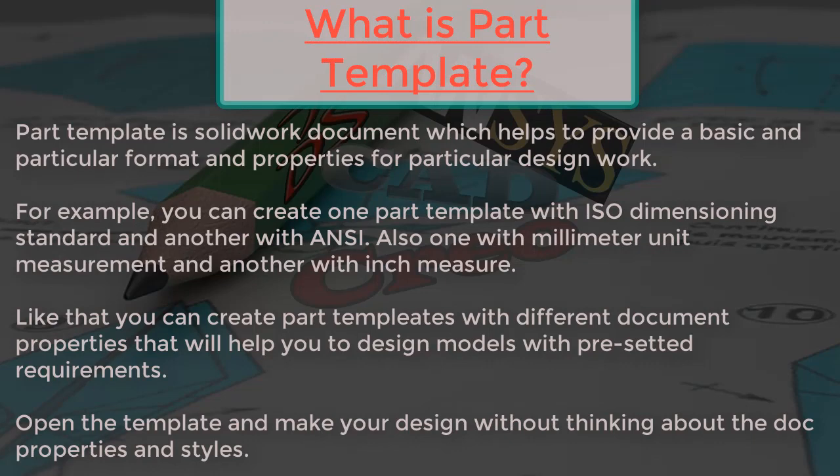What is a part template? A part template is a SolidWorks document which helps to provide a basic and particular format and properties for design work. For example, you can create one part template with ISO dimensioning standard and another with ANSI, the American standard. Also one with millimeter units and another with inch measurement. You can create part templates with different document properties to help you design models with pre-set requirements, opening the template and making your design without worrying about document properties and styles.